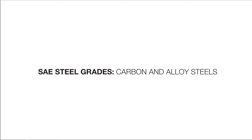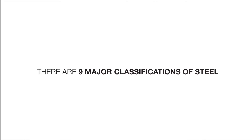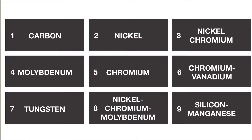In this video I'm going to be explaining the SAE steel grades. There are nine major classifications of steel. These nine include: one being carbon, two being nickel, three being nickel chromium, four being molybdenum, and so on and so forth all the way up to nine.